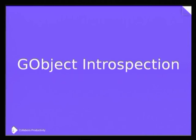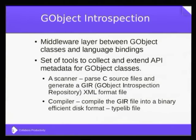Now let's talk about GObject introspection. It is the magic we are using for making the library usable from many languages — for example, you can have your client in JavaScript, Perl, Python, or any language which GObject introspection supports. So you don't have to write your client in C or C++. It's a middle layer between GObject classes and the language bindings.